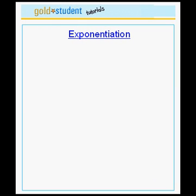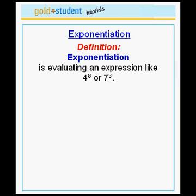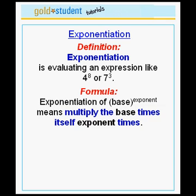This is the second tutorial on how to perform exponentiation. Let's remind ourselves of the definition. Exponentiation is what you do when you evaluate an expression like 4 to the power 8 or 7 to the power 3. The formula is that exponentiation of a number we call the base to the power we call the exponent means that you multiply the base by itself exponent times.